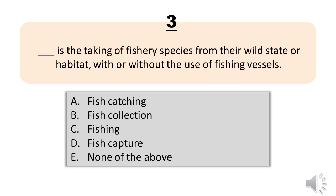Number 3. Blank is the taking of fishery species from their wild state or habitat, with or without the use of fishing vessels. A. Fish catching. B. Fish collection. C. Fishing. D. Fish capture. E. None of the above. The correct answer is Letter C. Fishing.